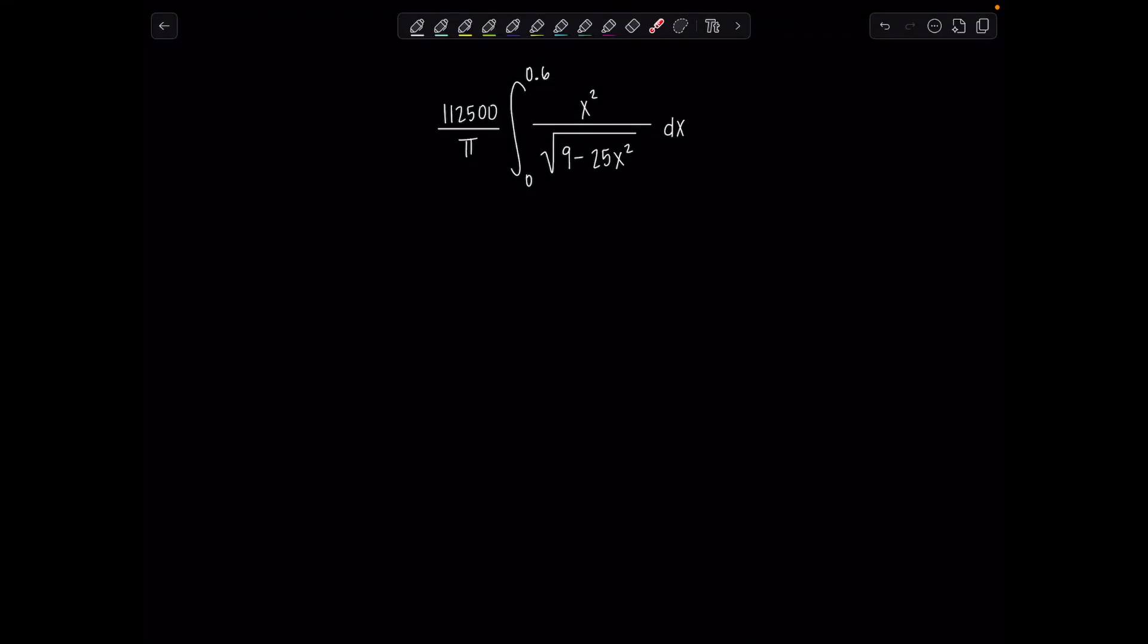Welcome to Math with Professor V. This is the final video in the countdown to 2025 for 13 integrals in 13 days. We have a very special definite integral from 0 to 0.6 of x squared over the square root of 9 minus 25x squared dx, all multiplied by 112,500 divided by pi.